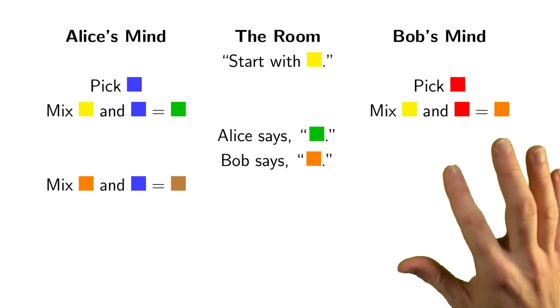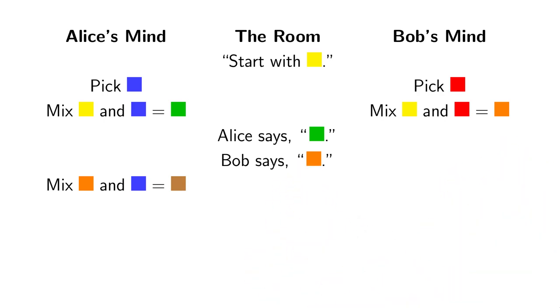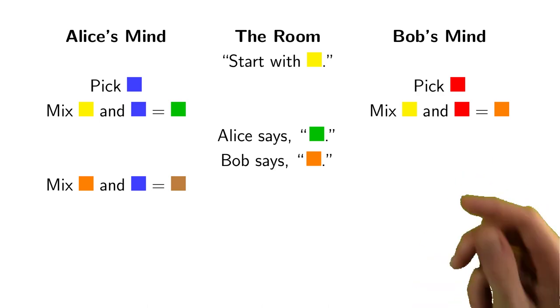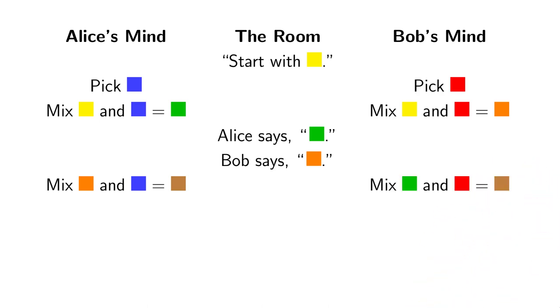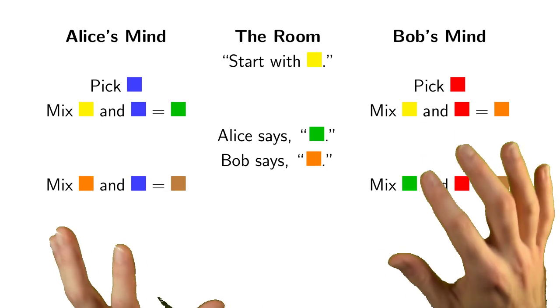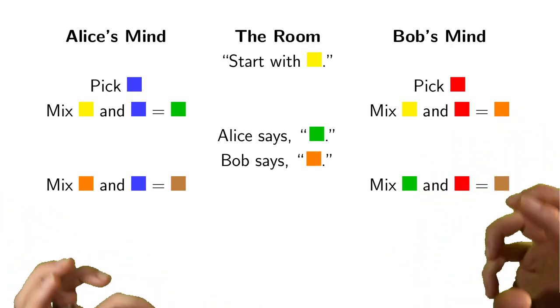But what's Bob going to do? Bob heard Alice say green and Bob will mix what Alice said, green, in with his secret color, red, in order to also get brown.